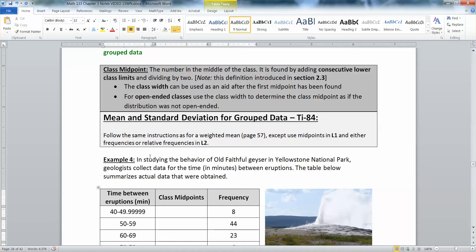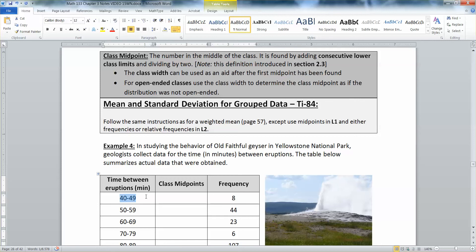It's the number in the middle of the class, but where a lot of students go astray is they think, oh, if it's in the middle, I'll just take 40 and 49 and add them up and divide by two. Au contraire. The problem is that it's really 49.9999999 forever. So what you do is you take consecutive lower class limits. You take one lower class limit and the next lower class limit. So I could do it for the first group. This is 40, the first lower class limit. The next lower class limit is 50. So I'll take 40 plus 50, add them up and divide by two. And when I do that, I would get 45. And that becomes my class midpoint.